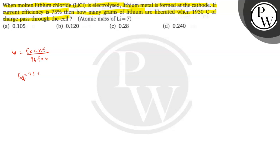If we see our effective charge, effective charge would be equal to 75 divided by 100 into 1930, which is the coulombs of charge given to us. It would be equal to 1447.5 coulombs of charge.